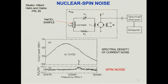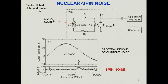They measured the current fluctuations in this resonator using a DC SQUID. The resonator was tuned at around 30 megahertz to match the nuclear quadrupole resonance of the chlorine atom spins. The spectral noise of the current fluctuations as a function of frequency shows a small bump, indicating that the spin system is emitting photons into the resonator because of fluctuations induced by the current fluctuations in the resonator.